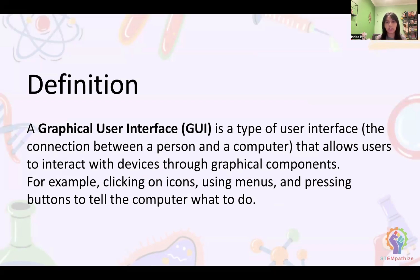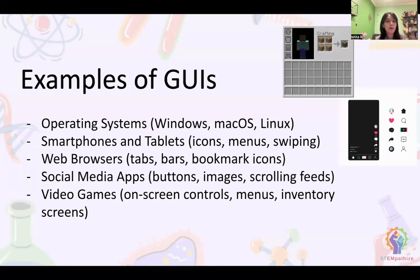When we click on a button that says 'start,' we know exactly what we're telling the computer to do. In the computer's mind, though, there's a whole other process going on. But for us, it's really easy to tell the computer what to do rather than telling it in its own language — zeros and ones or with code. Some examples of GUIs are operating systems, smartphones, web browsers, social media apps, and video games. Almost anything you interact with on the internet or on a computer is a graphical user interface.